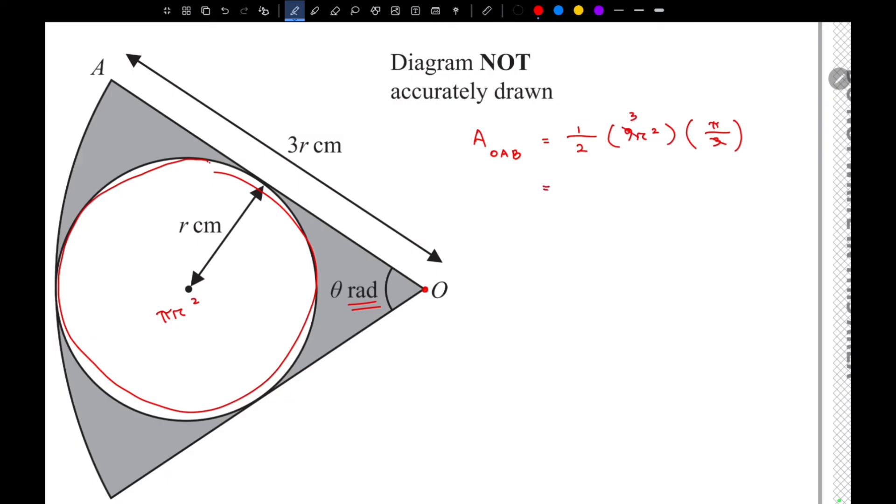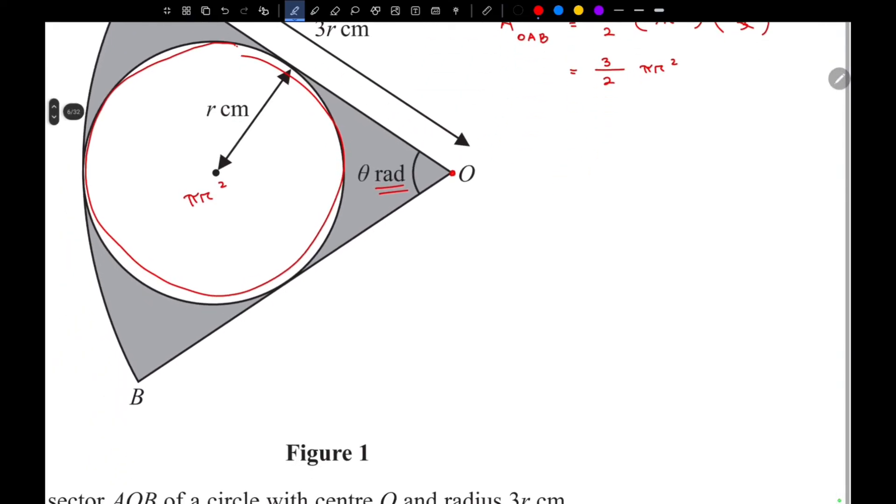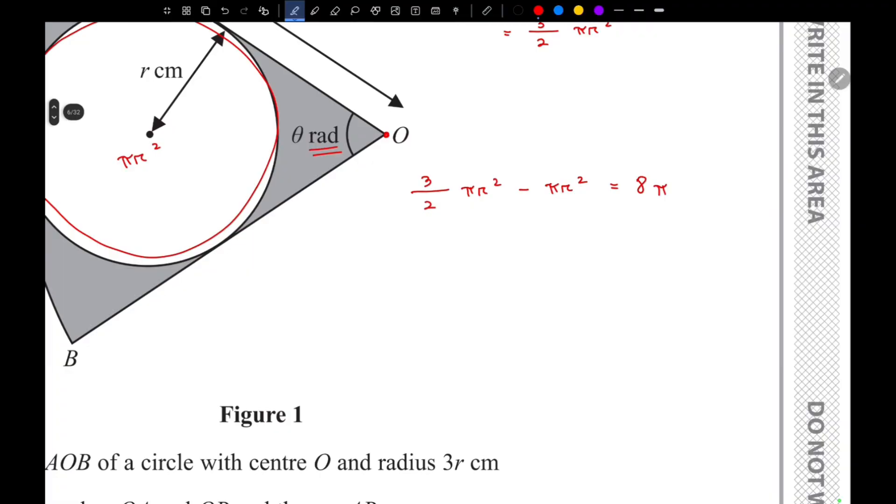This gives us a value of 3/2 πR². So now we can say that the area of the whole sector minus the area of the circle inside it, which is πR², this will be equal to 8π. So now we just need to solve this equation.